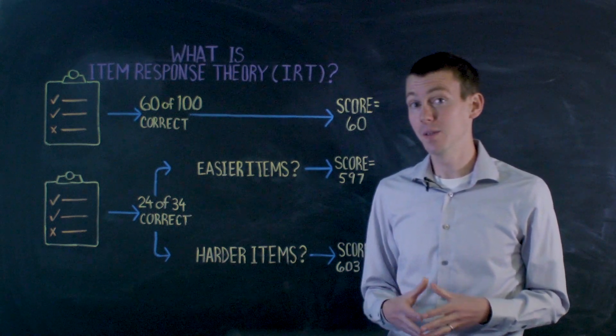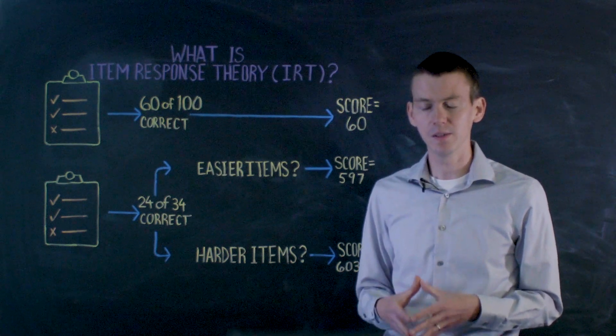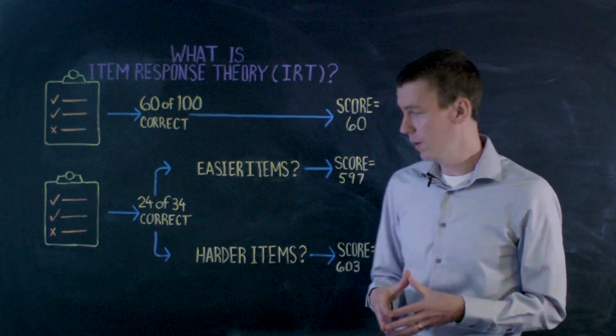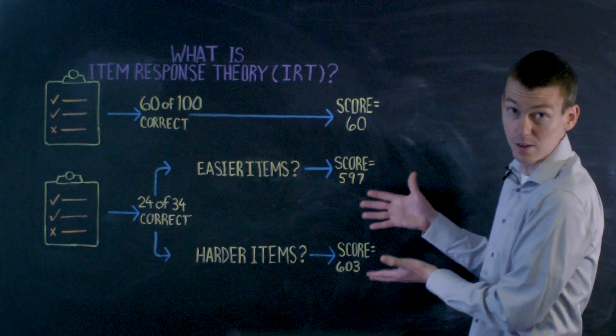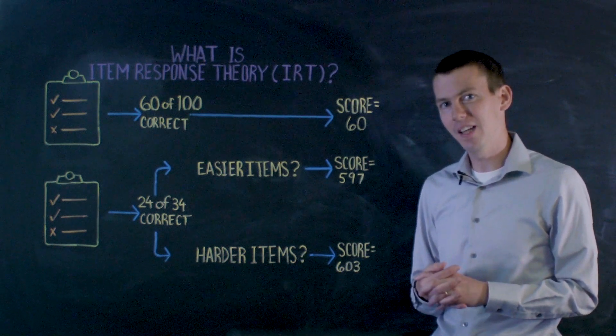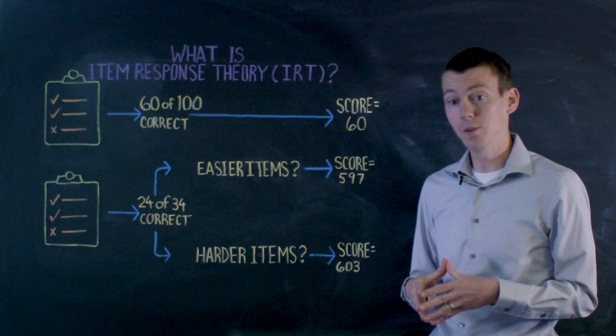One of the things that they allow us to do is they allow us to take student ability and item difficulty and put it on a single scale. And they allow us to directly compare student scores when they're seeing different types of questions, just like this. And they allow us to look at growth and change in ability over time, which is often very useful.